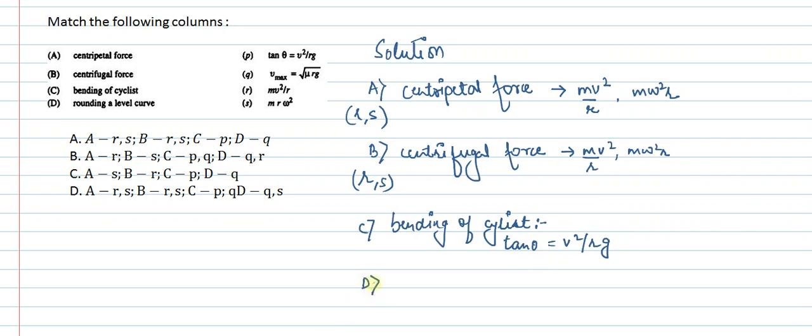Lastly, option D is rounding a level curve. This means on a level road, if you want to turn a car or bike, the maximum speed is v_max = √(μrg), where μ is the coefficient of friction, r is the radius of the turn, and g is gravitational acceleration. So D is matched with Q.